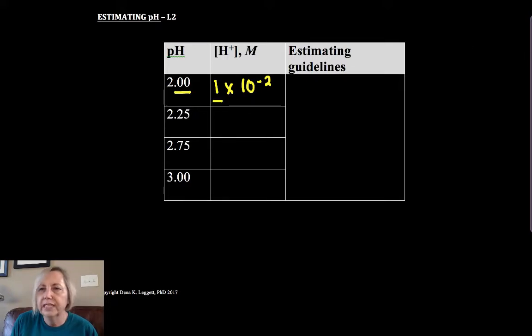The number in front is always related to the power. Now if we did this next calculation we get 5.6 times 10 to the minus 3. Remember, H3O plus is equal to 10 to the minus pH - that's how I'm getting these numbers.